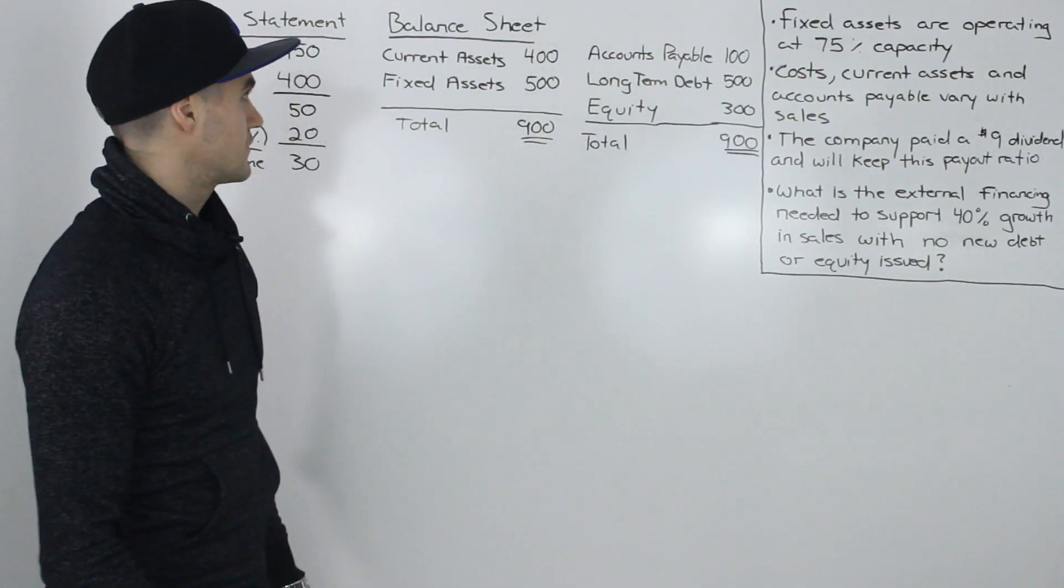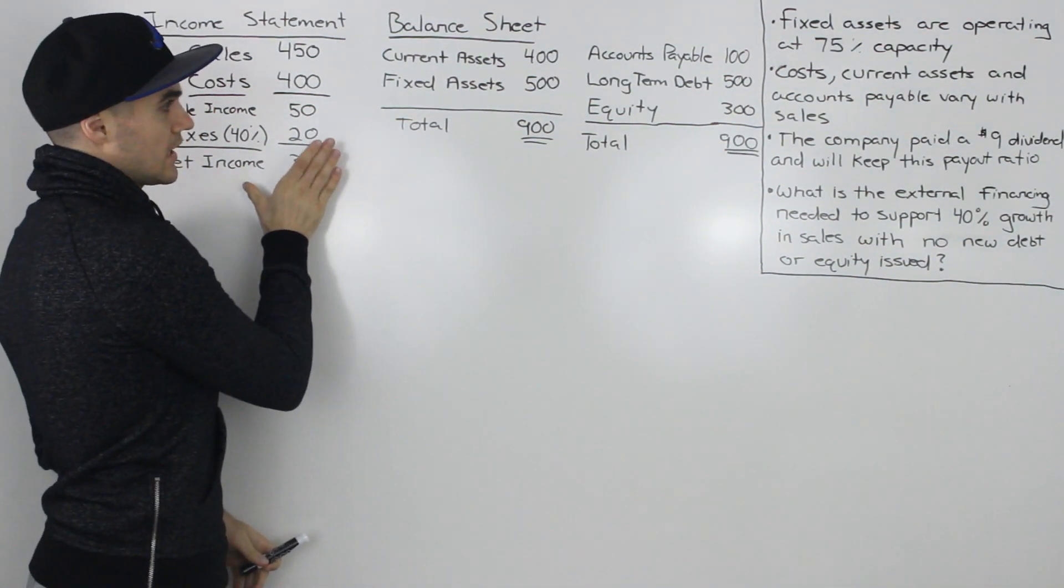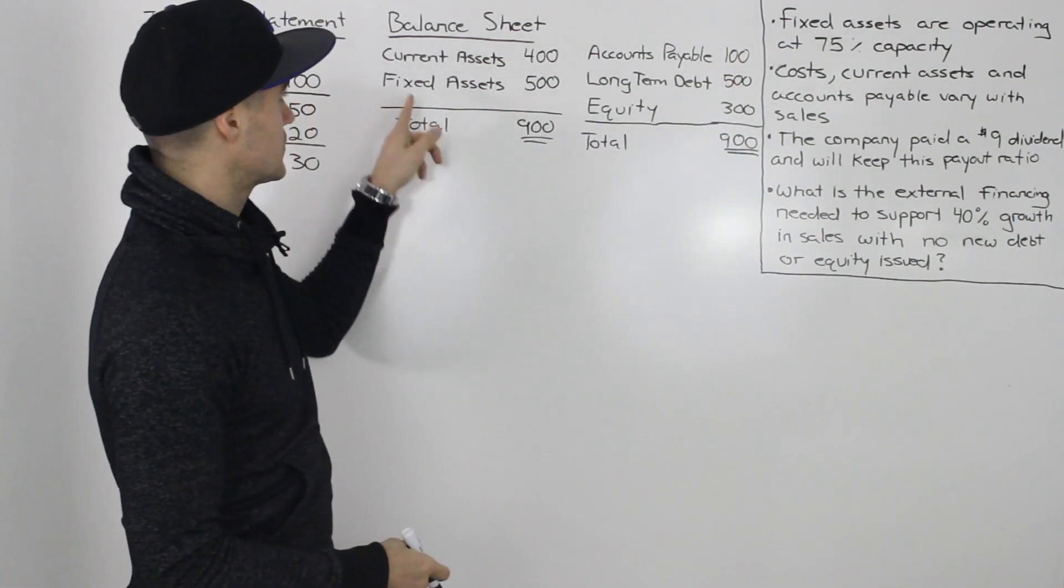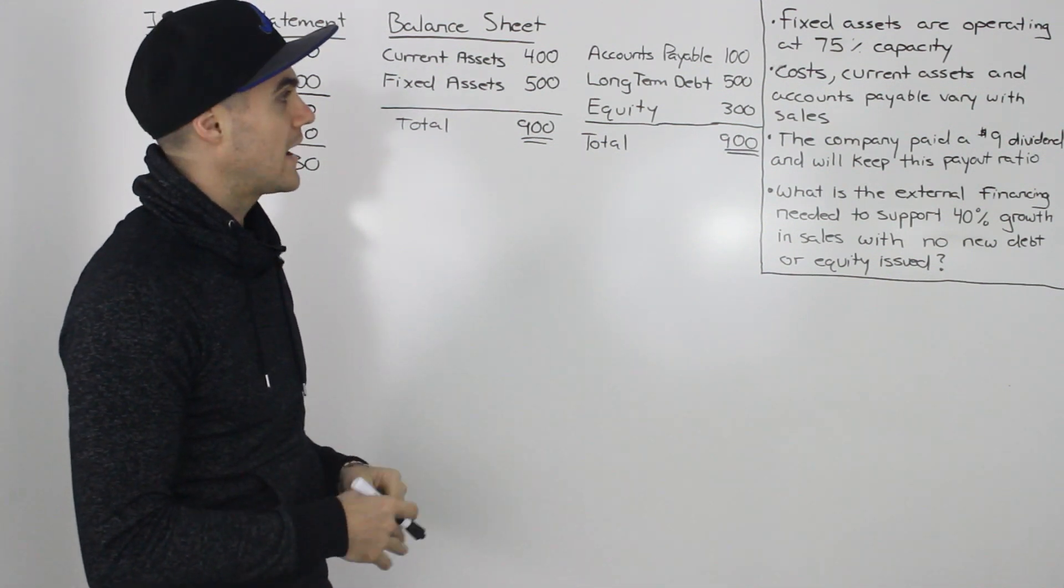And now moving on to the specifics of the question. So we have a company here with its most recent income statement and balance sheet. We're also told that the fixed assets, which are represented here on the balance sheet, are operating at 75% capacity.